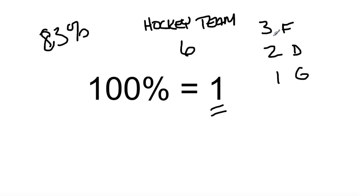Of this group of six, three of them are forwards. So 3 out of 6, or 1 half, or 50% are forwards.